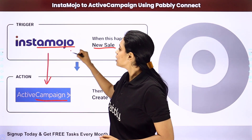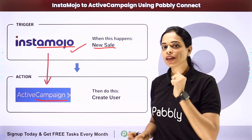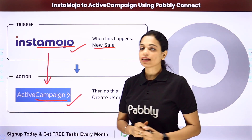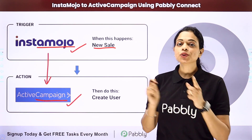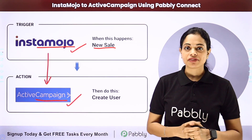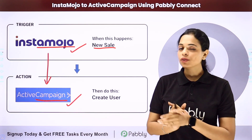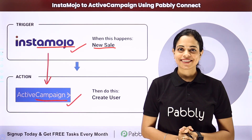To integrate the two applications, you will use Pabbly Connect software. Your trigger application will be InstaMojo and your action application will be ActiveCampaign. Let me take you to my screen to show you how you can integrate and automate this entire process yourself.